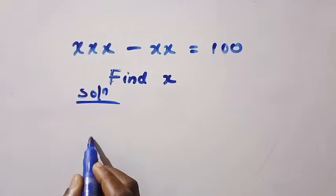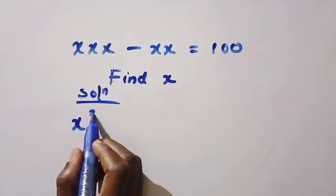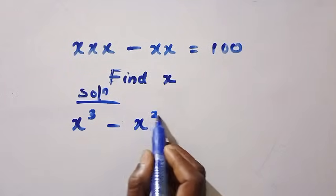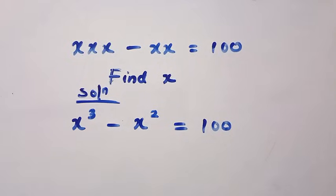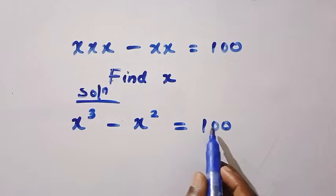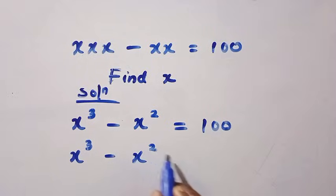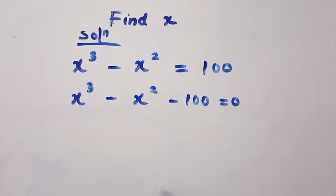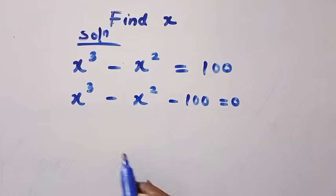We multiply x by x by x, which gives us x to the power of 3, then minus x by x, that is x to the power of 2, equals 100. Taking 100 to the left side, we have x cubed minus x squared minus 100 equals 0.